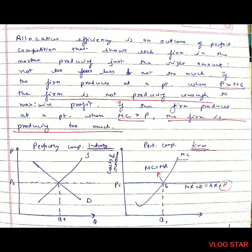If marginal cost is greater than price, the firm is producing too much. In perfect competition, the industry is the price setter and the firm adopts that same price. For the single firm, it charges a price equal to MC. The equilibrium point E is where price equals MC — when marginal cost equals price, it is the best allocation because that is the equilibrium point.